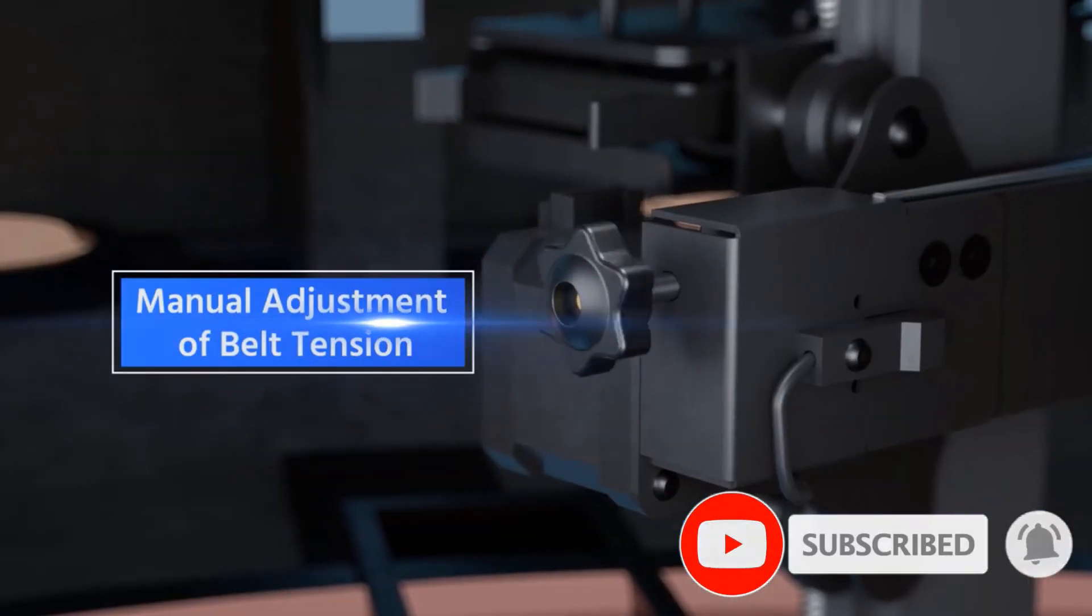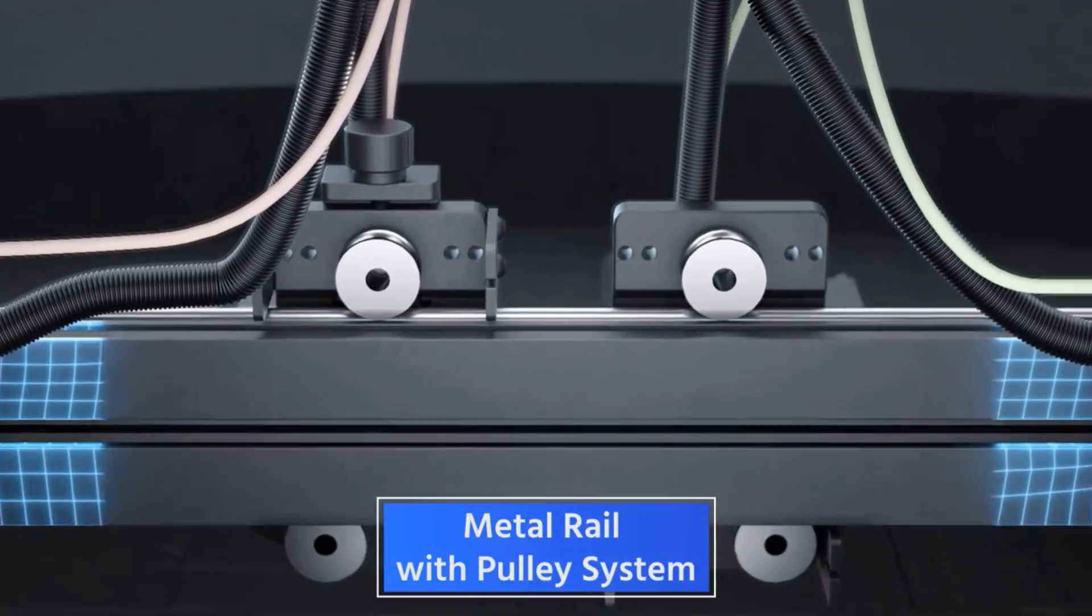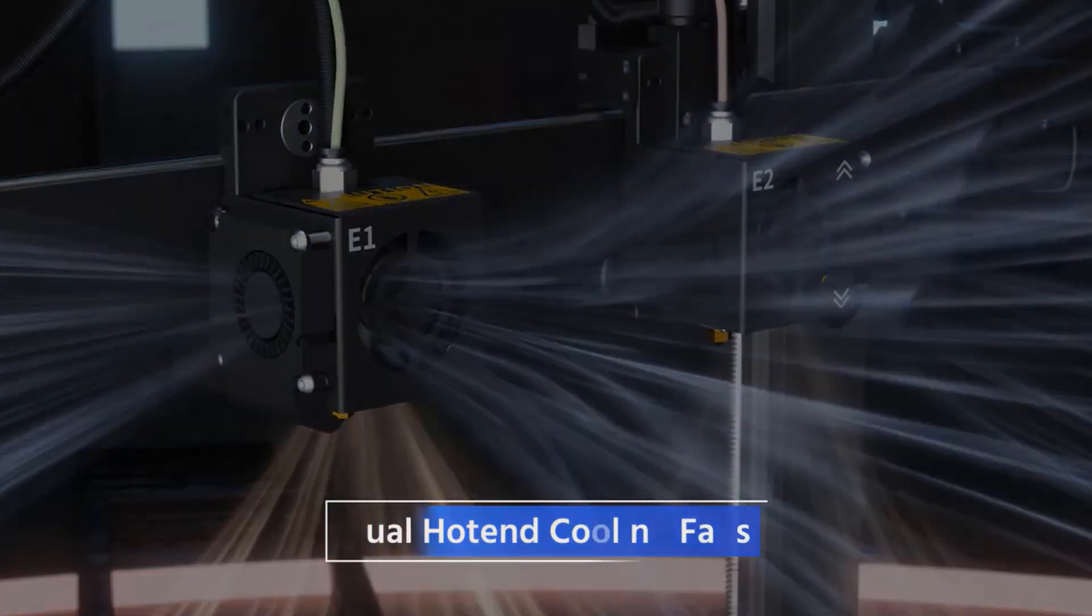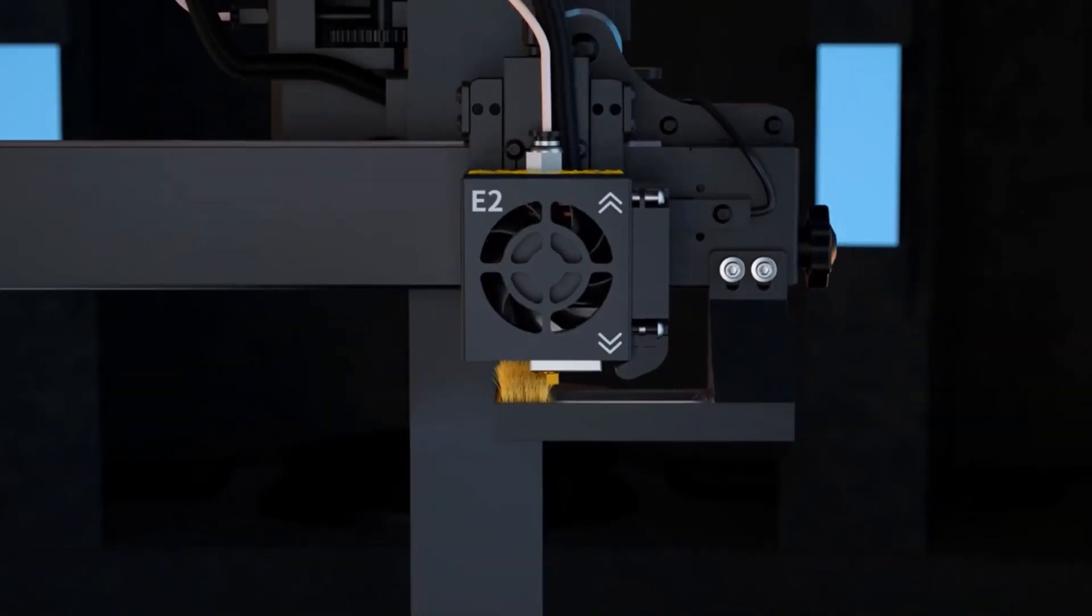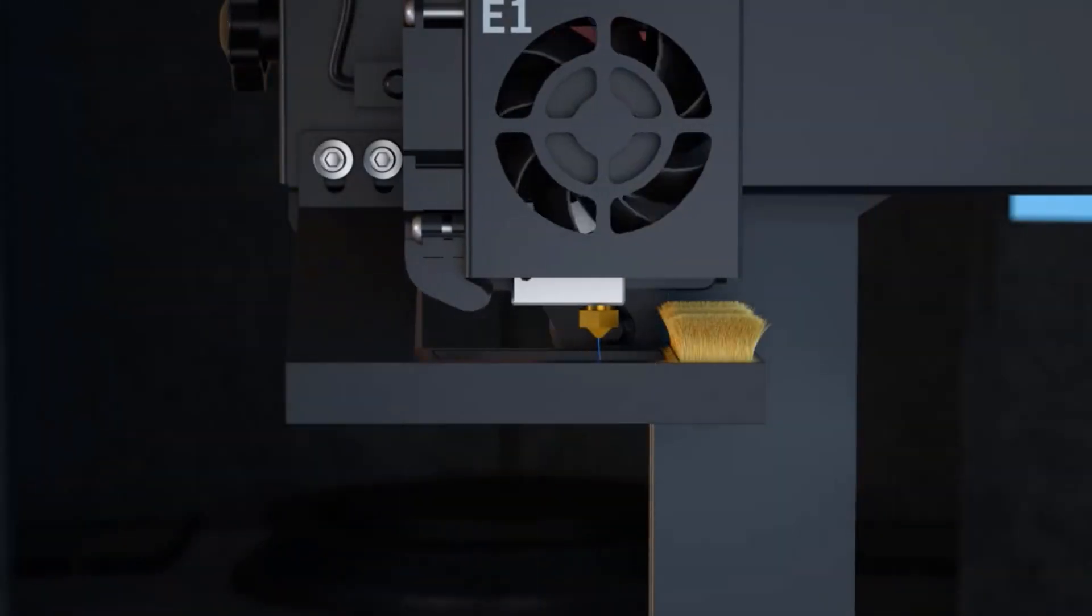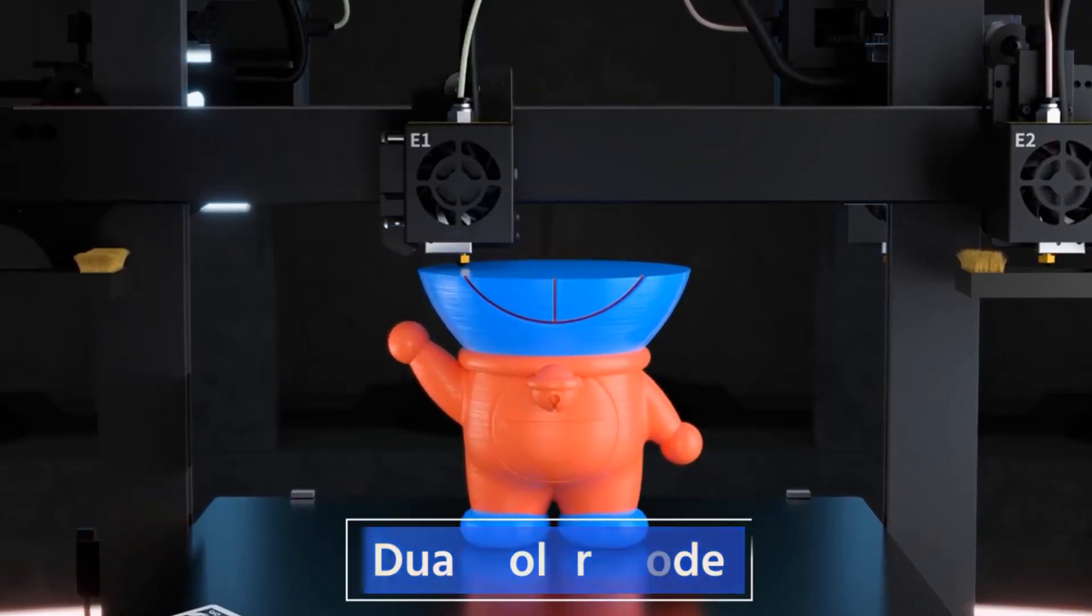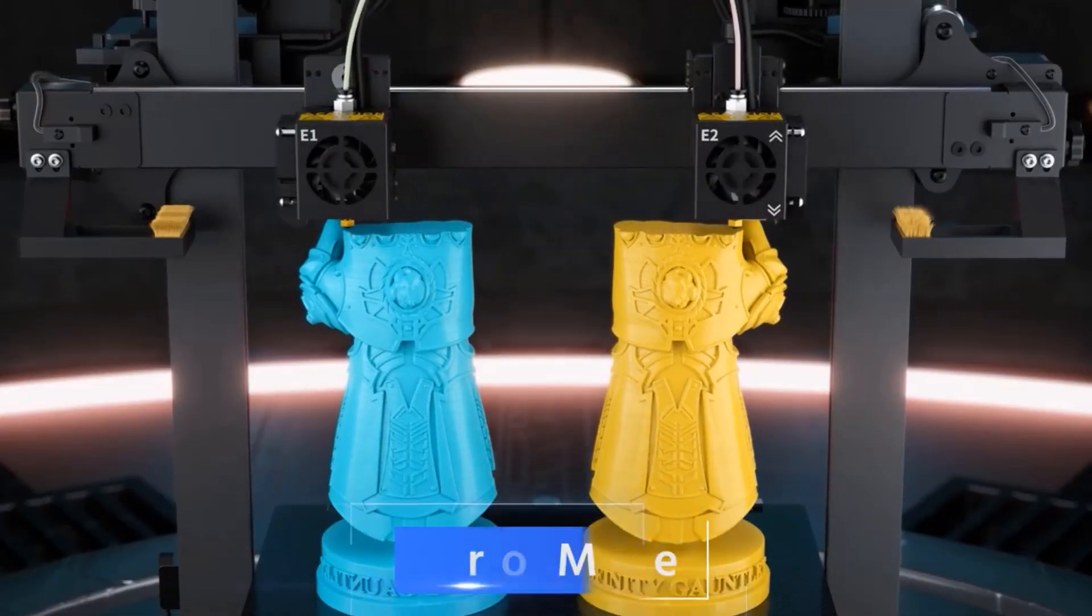Warning of broken filament detection: Gemini S is equipped with a high-sensitivity material broken detector. Once a material break occurs, it will automatically stop printing and emit a warning sound. Equipped with Titan extruder compatible with various consumables: Gemini S uses Titan extruder, suitable for all kinds of filaments such as PLA, ABS, PETG, wood, and TPU.